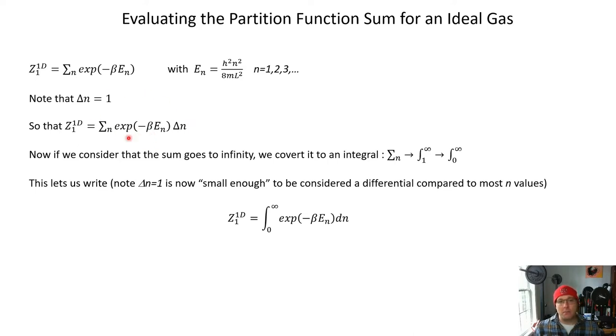So now if we consider that this sum is going to go to infinity, we'll convert it to an integral, because for large enough values of n, delta n equals 1 is really small. So we're going to start from 1 to infinity. We're going to say the lower limit of 1 can be replaced by 0. So why not? The difference between starting at 1 and starting at 0 is not very significant. And so now delta n equals 1 is small enough to be considered a differential. And we just have a definite integral as our one-dimensional partition function. So integral from 0 to infinity e to the minus beta E_n dn.